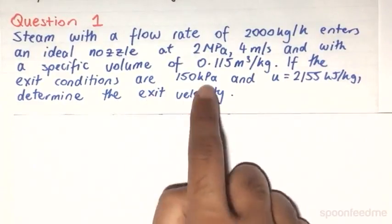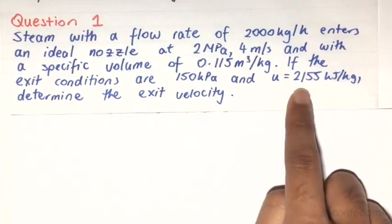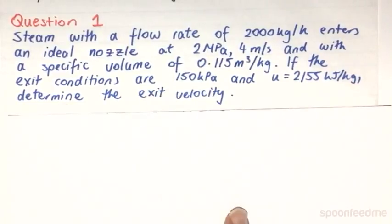If the exit conditions are 150 kPa and U equal to 2155 kJ per kg, determine the exit velocity.